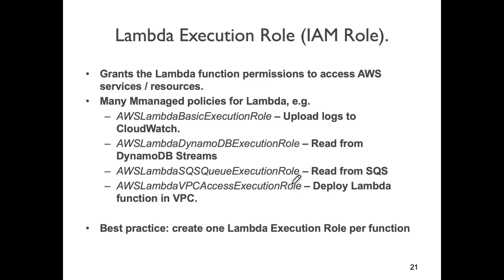Every lambda has what's called an execution role — you have to define an IAM role and associate it with the lambda function. Conveniently, the CDK does this behind the scenes for us, but if we had to write infrastructure as code using CloudFormation templating directly, we would have to create IAM roles, associate policies with those roles, and then attach the role to our lambda function for it to work.